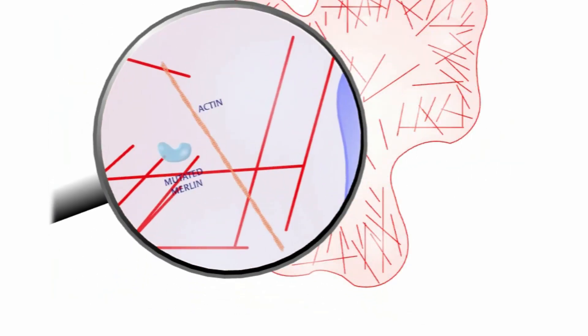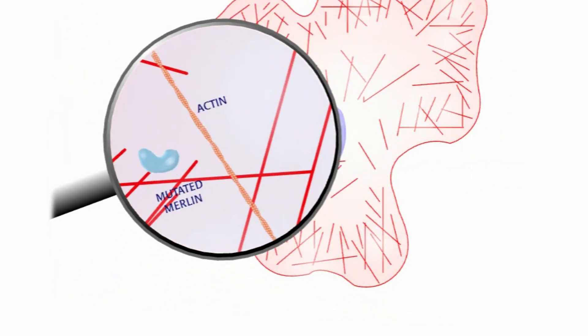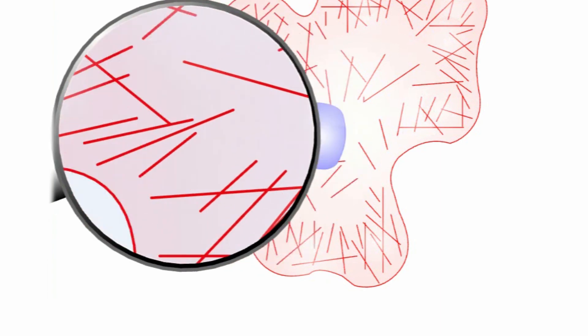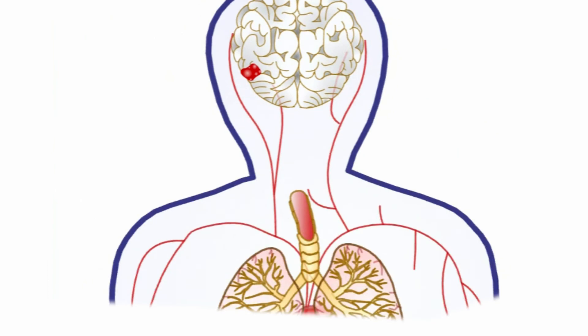There is evidence from cells grown in culture that when Merlin is mutated, the organization and control of cytoskeletal components is lost, leading to cell proliferation and spread.